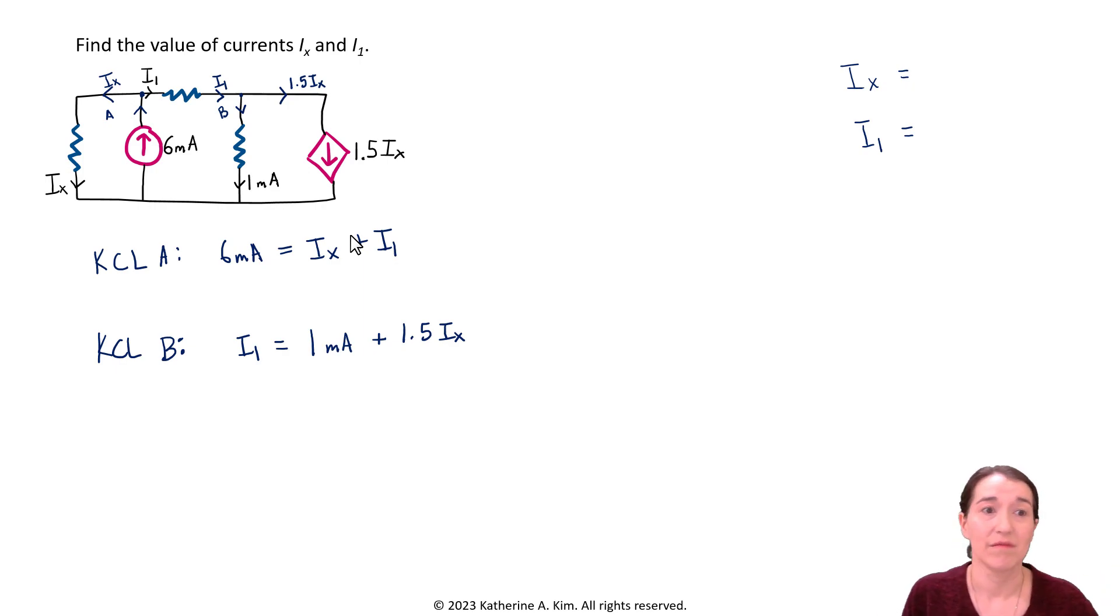And let's solve it. So we notice right away that I1 is already written over here. So we can just substitute that in here. And let's rewrite that. So we have one equation in terms of IX. So now this one will become six milliamps equals IX, and then plus we're going to move this into there. So it's one milliamp plus 1.5 IX. Now we're just solving for IX.